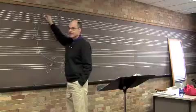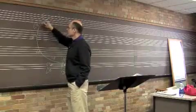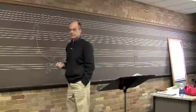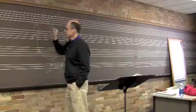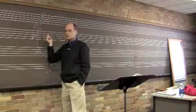Relative minor of F major? D minor. Relative minor of B flat major? G minor. Good. And what's the key signature of G minor? Two flats. It's the same as B flat, right? Two flats.